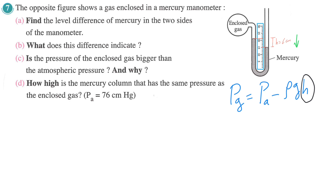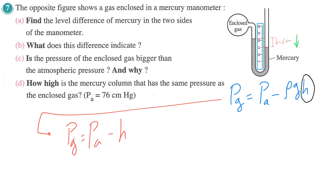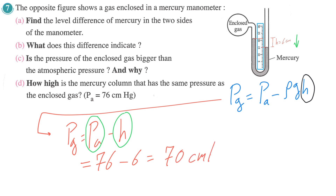How high is the mercury column that has the same pressure as the enclosed gas? The pressure of the gas equals atmospheric pressure minus H. The atmospheric pressure equals 76 cm mercury, and the height of mercury here is 70 cm, so the pressure equals 70 cm mercury.